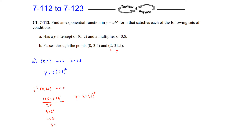Remember, b could also equal negative 3 when solving the problem, but that won't work because our multiplier has to be greater than 0. So negative 3 would not be an option for our equation.